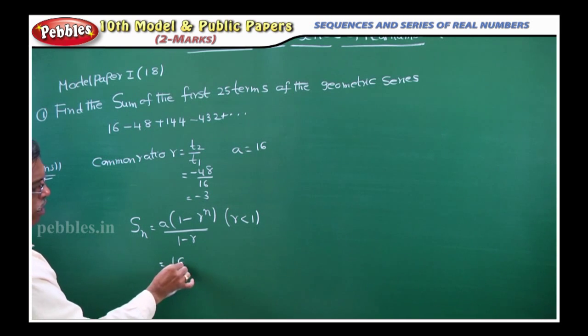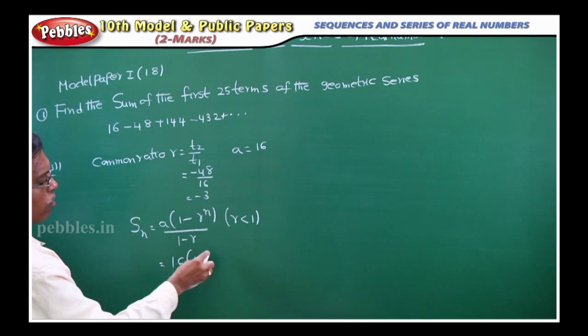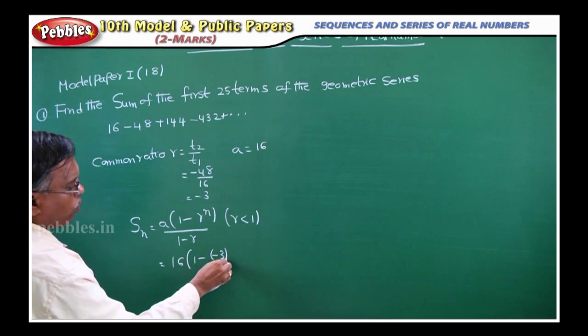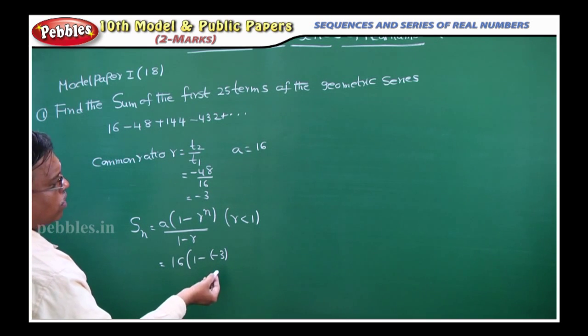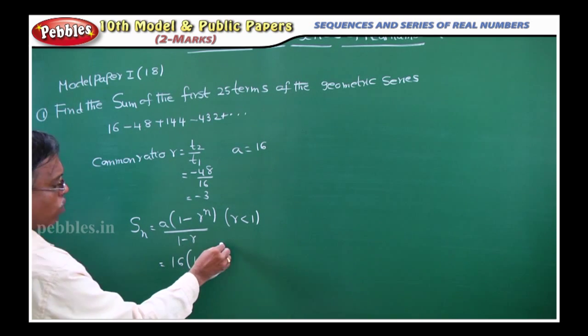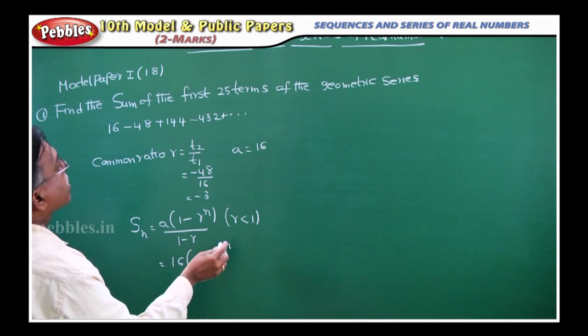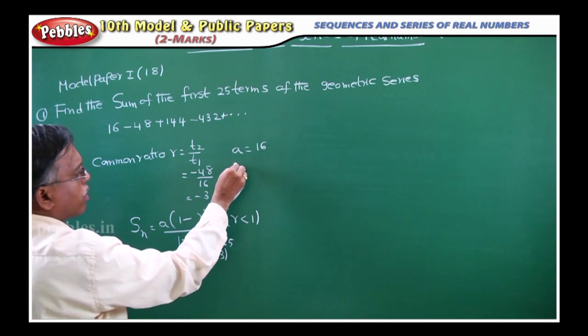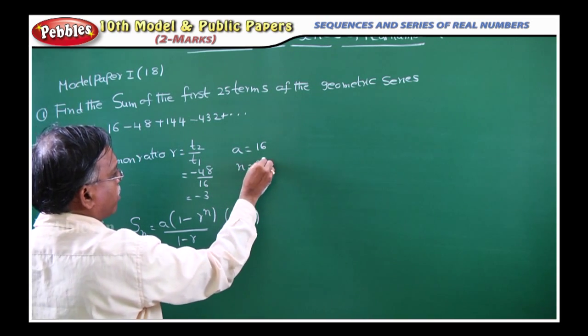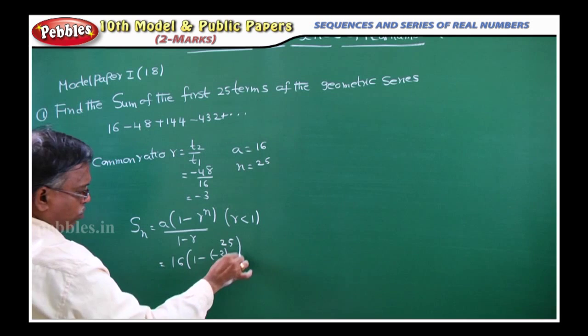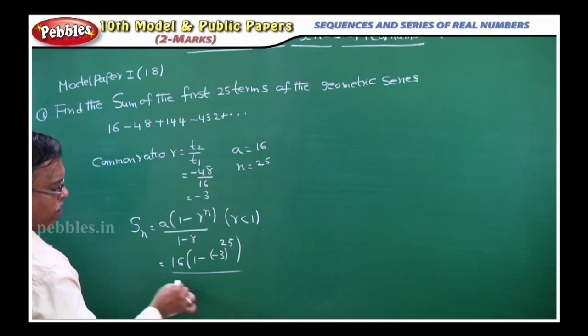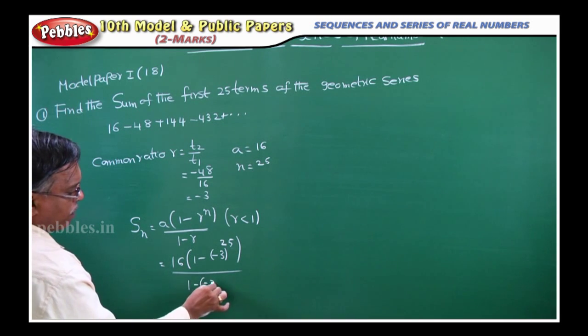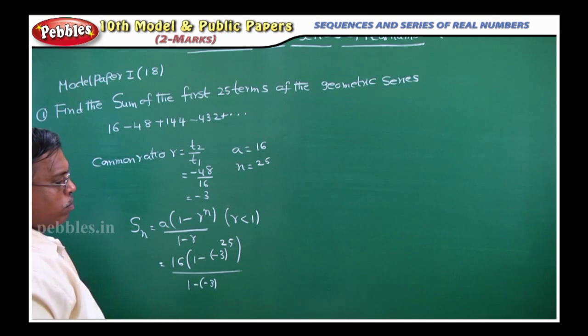Now A value 16, 1 minus R value minus 3 whole power N. Anyway, N value we don't know, unknown. But here there will be 25 terms, so N also given as 25. Close the bracket by 1 minus of minus 3, because R value minus 3.